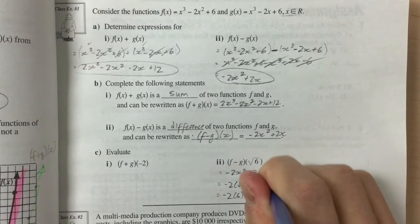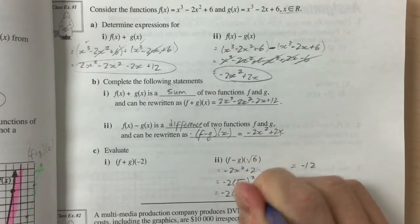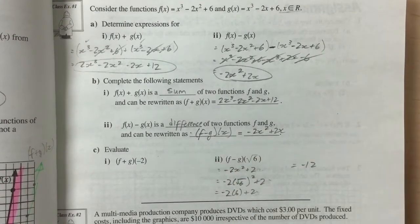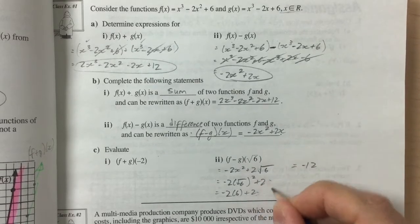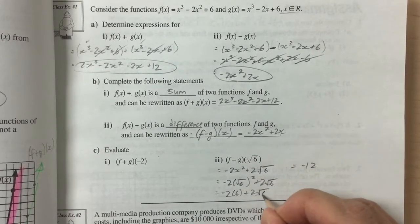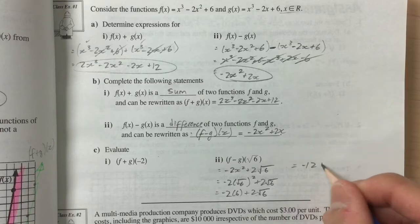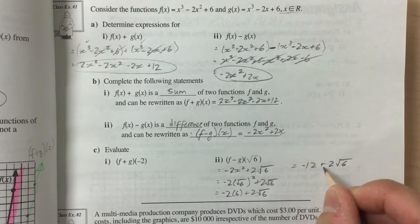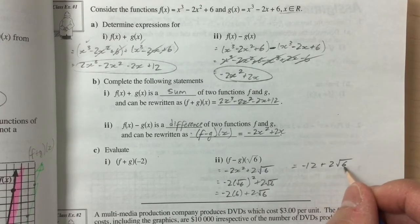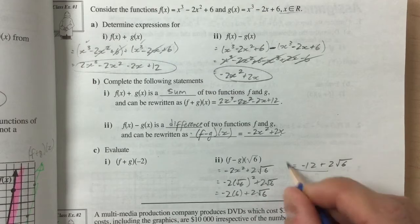And every time we have an x, we've got to replace this with square root of 6. So that would be square root of 6, square root of 6, square root of 6. And this will be the most simplified we can get because there's no perfect squares in 6.